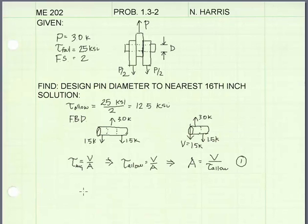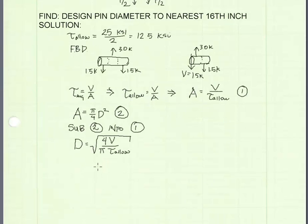The cross-section of our pin is circular. The area of the cross-section is given as pi divided by 4 times the diameter squared. I'm going to call this equation 2. Substituting equation 2 into equation 1 gives me the following equation for the diameter. I will now substitute 1.5 kips in for V, and 12.5 ksi in for allowable shear stress.